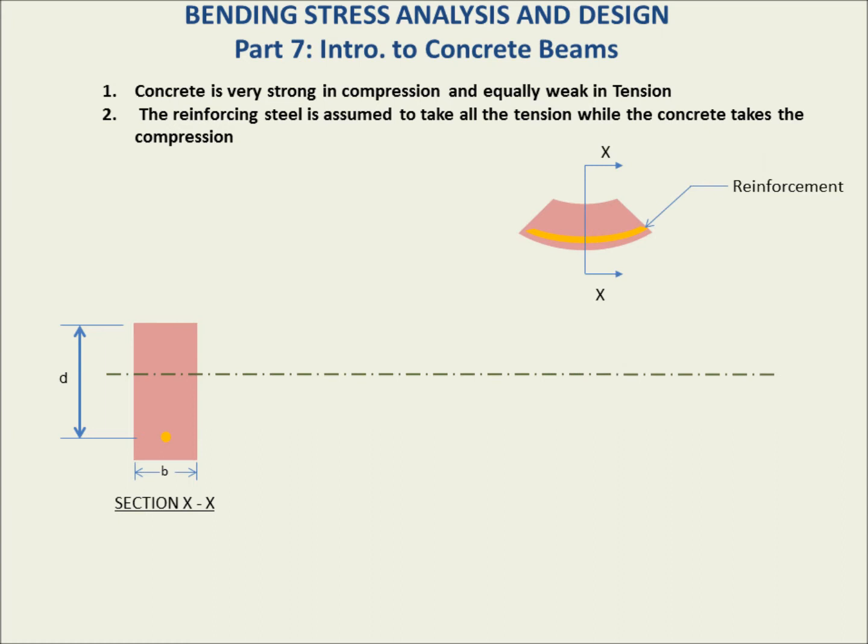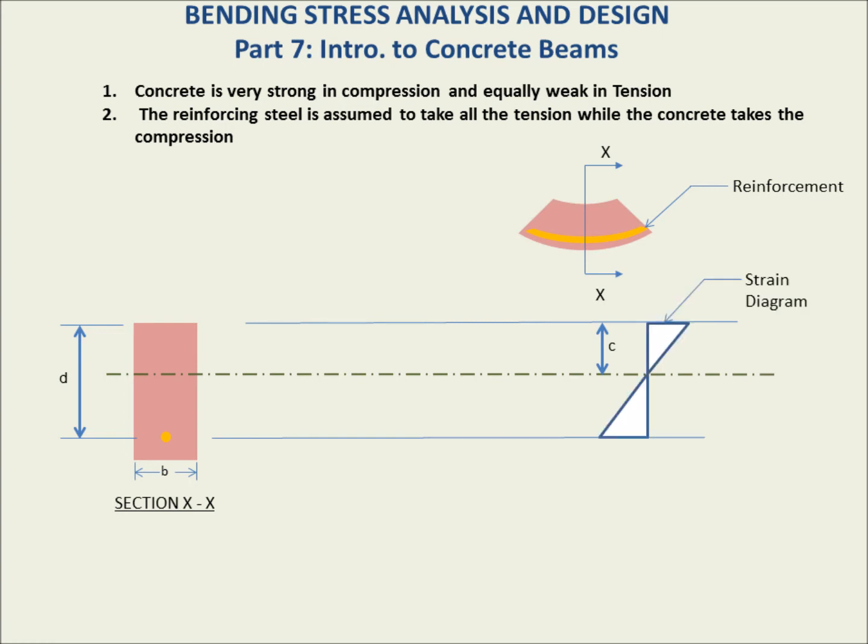Knowledge of the material in the first four videos is assumed here. Looking at the strain diagram, we expect a linear transition from the tension zone to the compression zone — a linear strain distribution, which is empirically verifiable. However, because we're taking tension with a different material and the tension region is cracked, and because we're using two different materials with different stress responses to strain, while we have a linear strain distribution, we're not going to see a linear stress distribution.